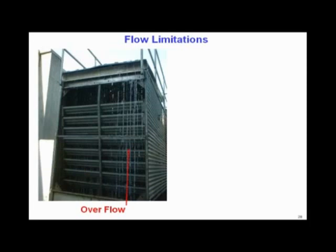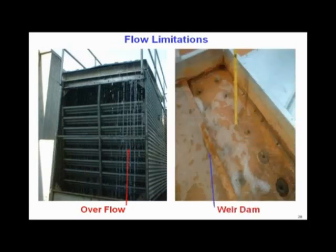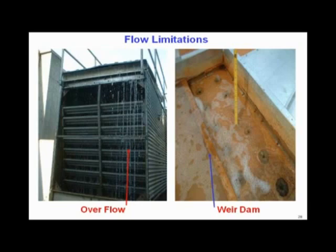Putting this all together with flow limitations: on the left-hand side you can see overflow — water is just going off the hot decks down the side of the tower, which is a waste, extra pumping cost, chemical cost, and in cold weather that tower is going to freeze. On the right-hand side, that's the weir dam on the hot deck itself — just a small piece of metal placed across the top of the hot deck to dam it up.